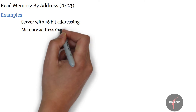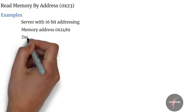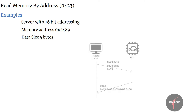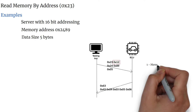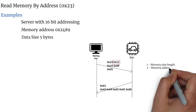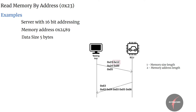Next, let's look into our second example where a server has 16-bit addressing. Then to access the data from memory address 0x2489 of 5 bytes, the client request shall be as follows. The address and length format identifier in the request shall be set to 0x12 — 1 for memory size length and 2 for memory address length. The server shall respond with data as follows.